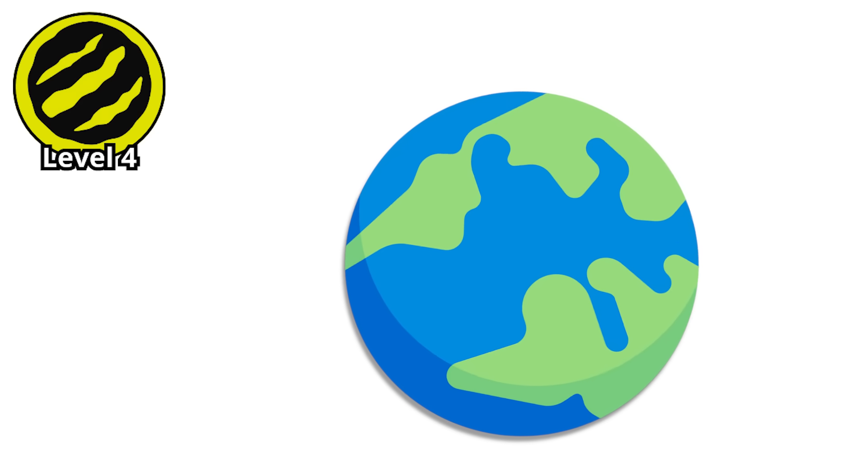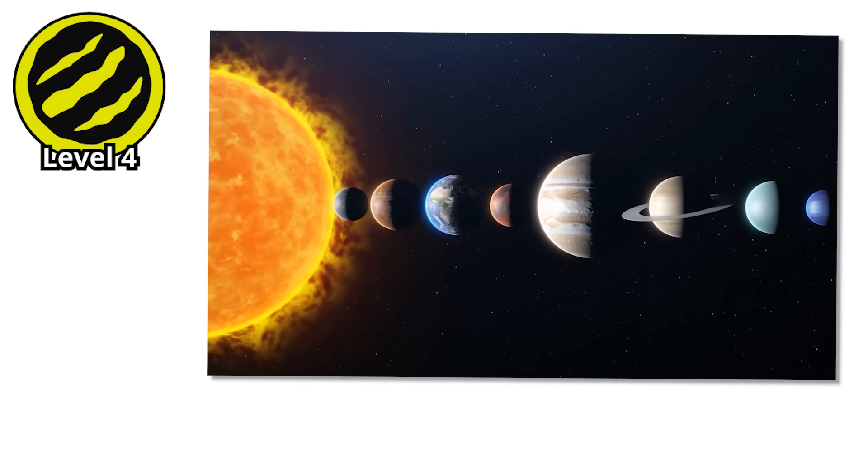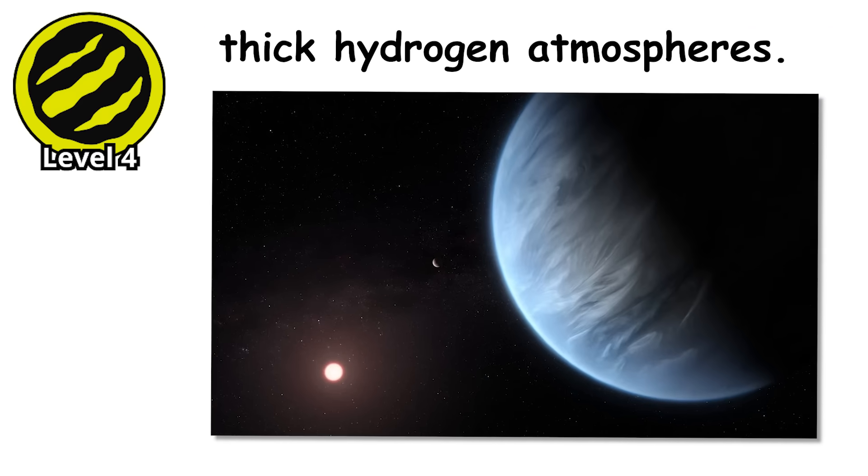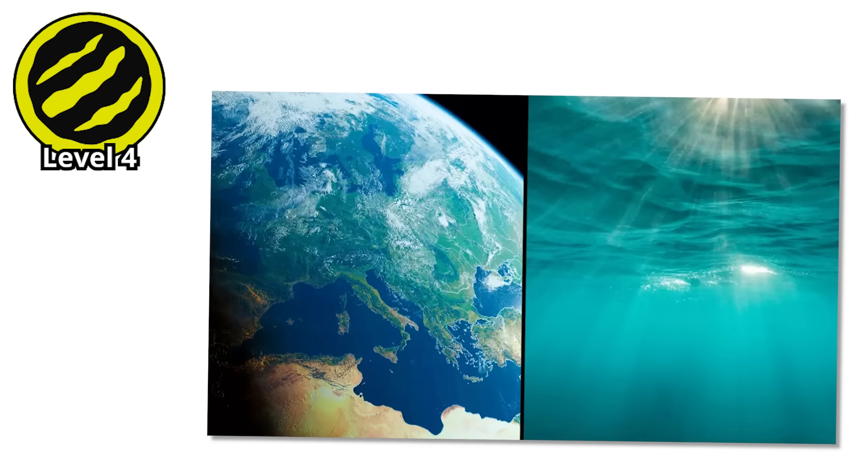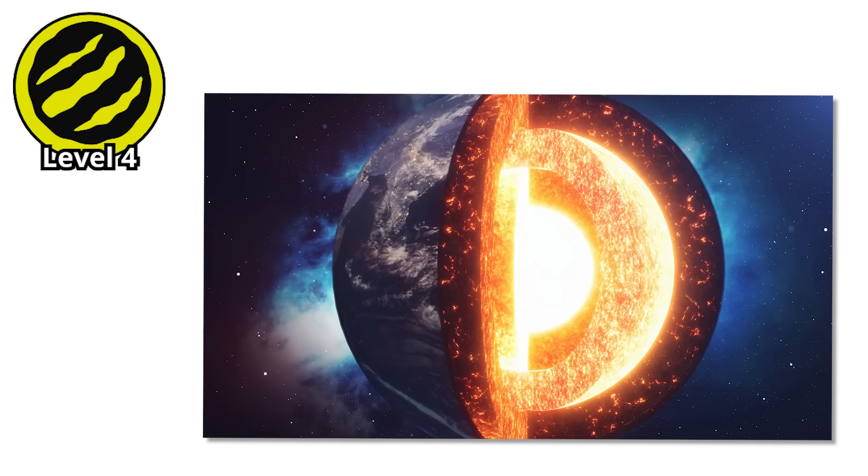Super Earths are the most common type of planet we've discovered around other stars, which is bizarre because our solar system doesn't have any. These planets blur the line between terrestrial worlds and mini gas giants. Some might have thick hydrogen atmospheres. Others could be scaled up versions of Earth with massive oceans covering their entire surfaces.